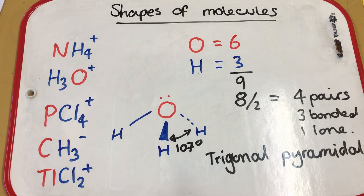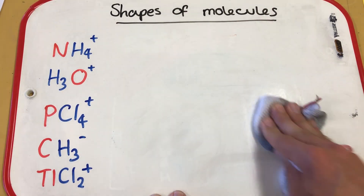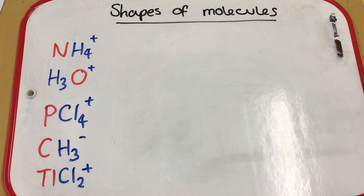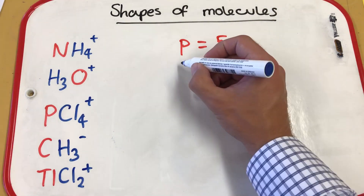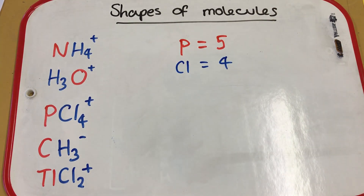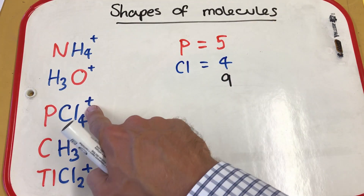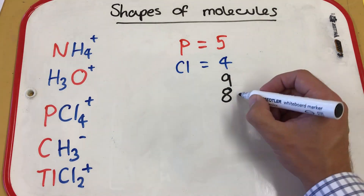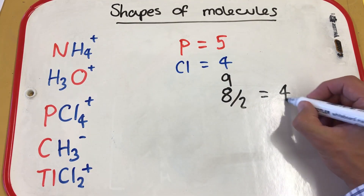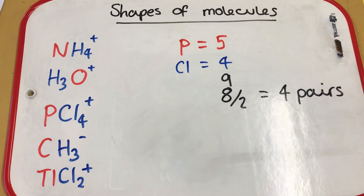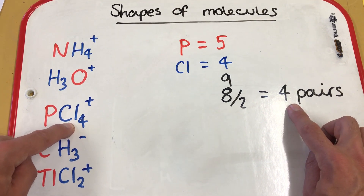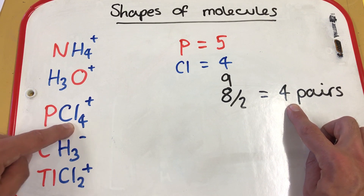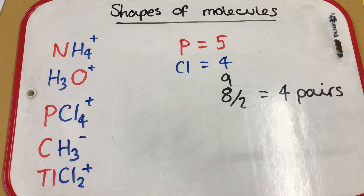Next, PCl4+: phosphorus is in group five, with four chlorines attached, giving nine electrons in total. We have a plus charge, so we take one away to make eight, divide by two to get four pairs. All four pairs are involved in bonding with no lone pairs, so this must be a tetrahedral structure with 109.5 degree bond angles.